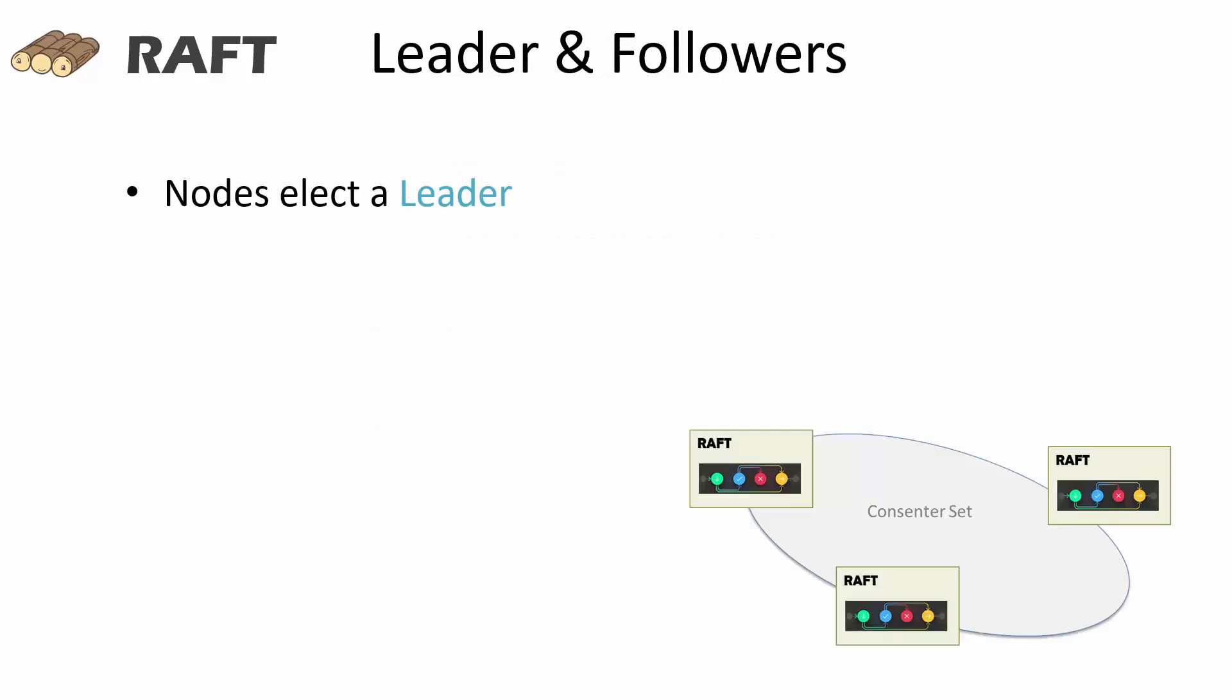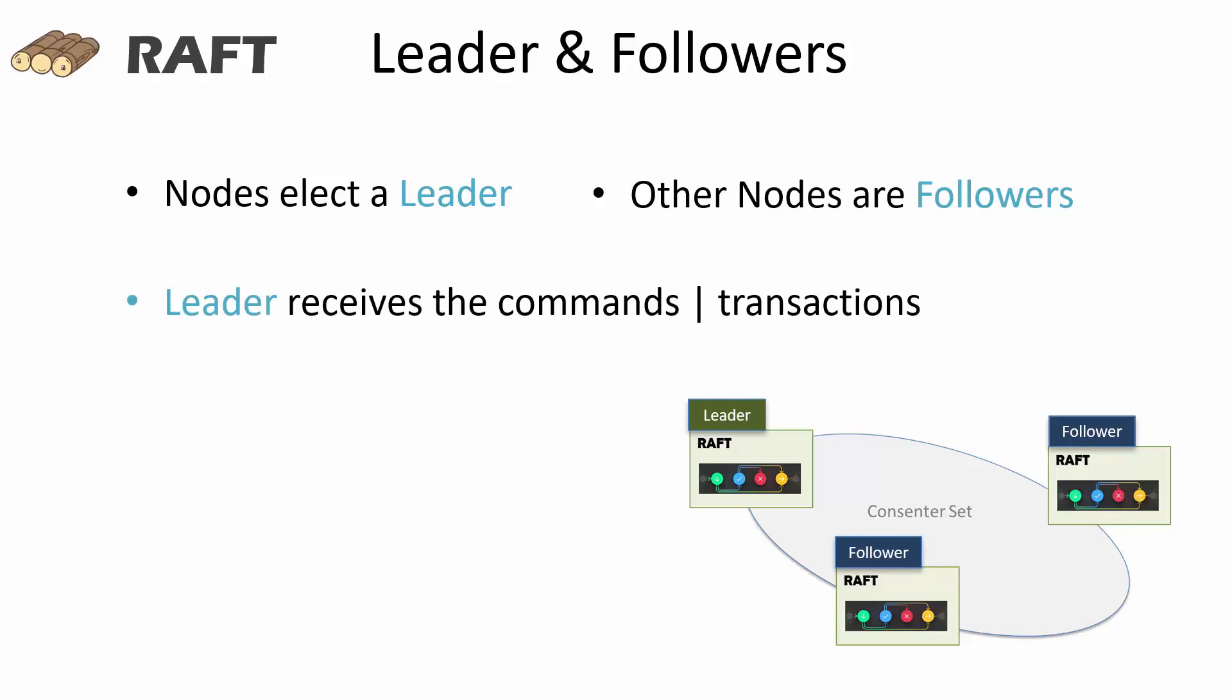The nodes in the raft cluster elects a leader in the cluster. The other nodes in the cluster are referred to as the followers. At any point in time, the cluster can have only one leader. This leader receives the commands or the transactions from the raft cluster clients. These commands lead to the creation of the log entry in the finite state machine managed by the leader and then the leader replicates the log entry to the followers in the raft cluster.